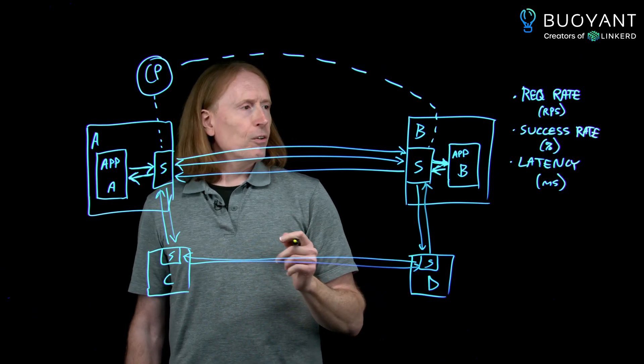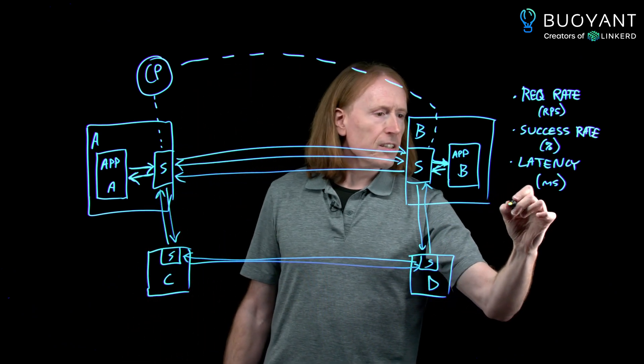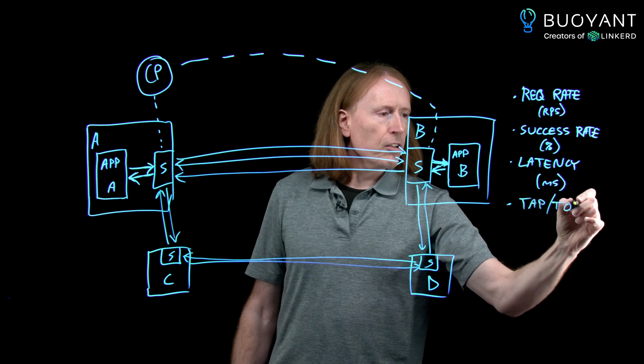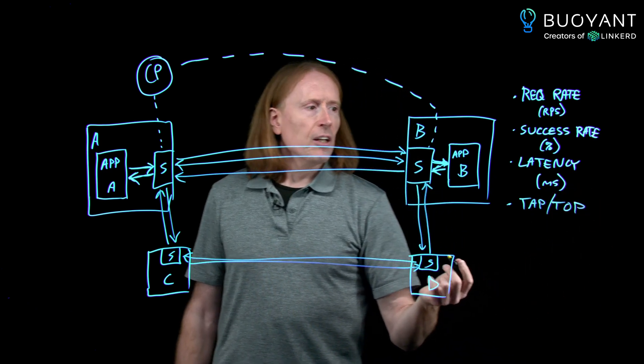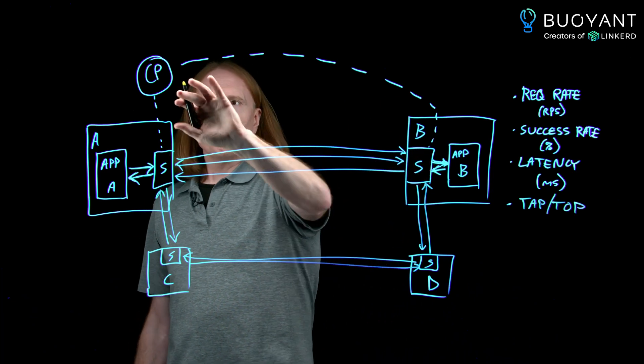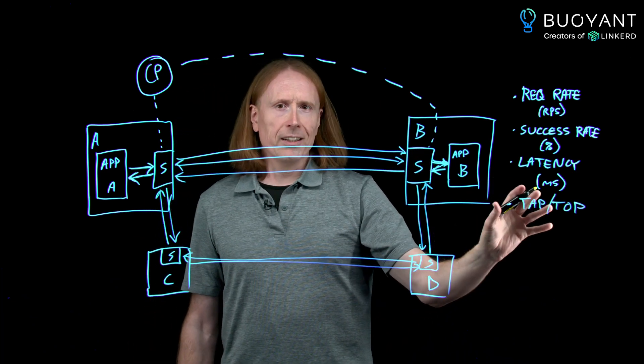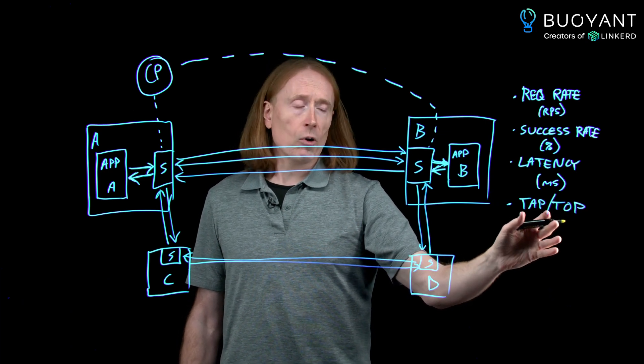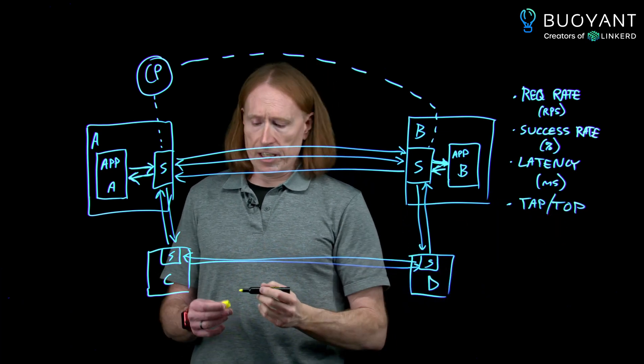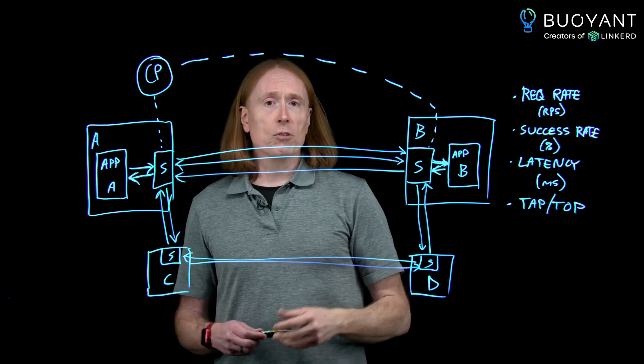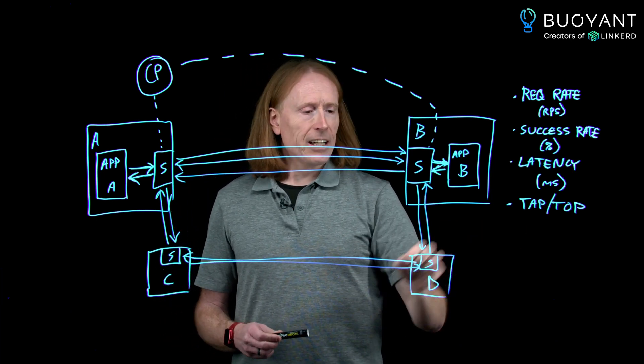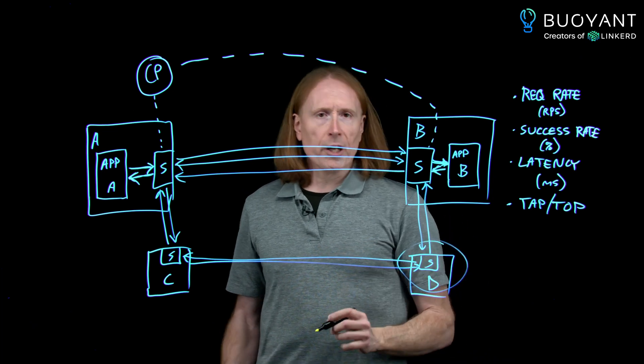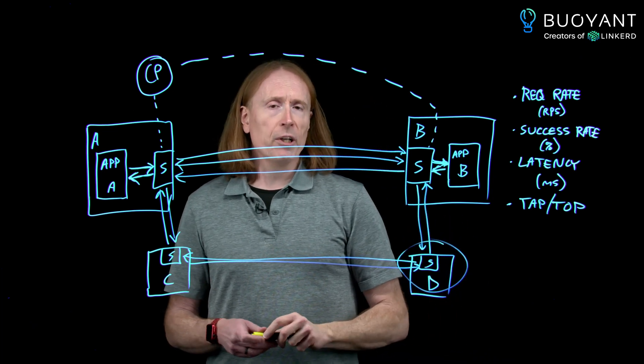Another thing we get to do, the final thing we get to really do that's nice is at Linkerd, we call these tap and top. But since we're always in communication with control plane, we can also go through and send information about what are the most common requests that are happening right now and did they work. We can even send back live data about the headers, the requests, the responses. So you can get at any point, you can effectively put any of these under a microscope and watch exactly what's happening in real time.